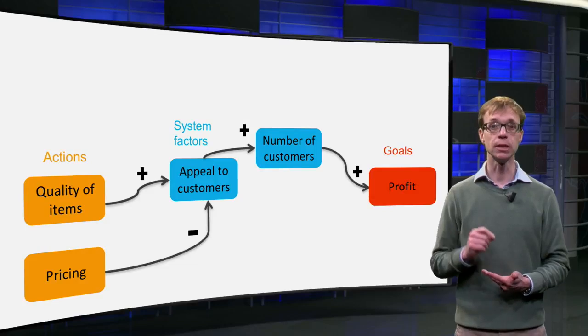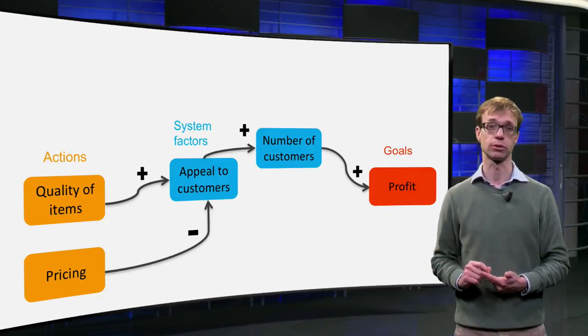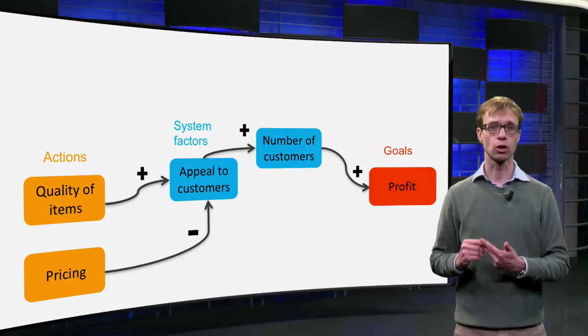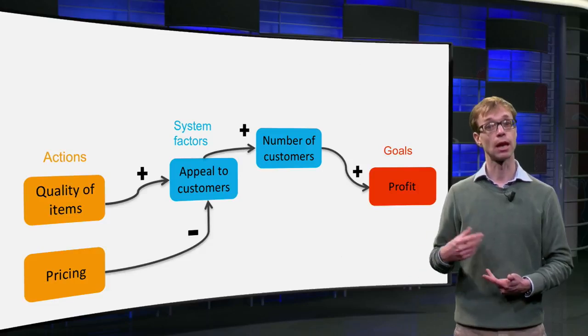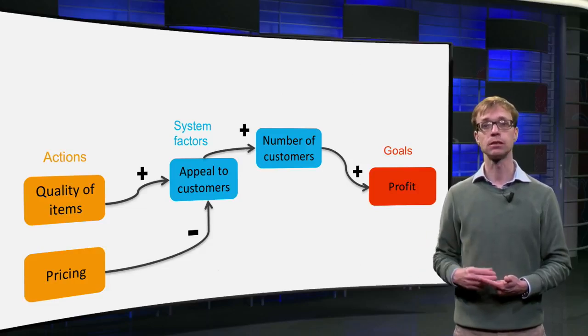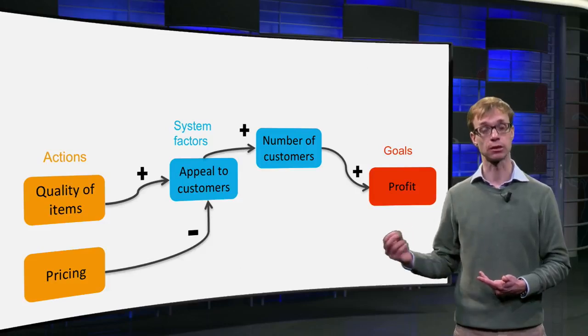System factors are intermediary factors that help unpack the causal mechanisms involved. For instance, the quality of items in the shop may influence their appeal for customers. Likewise, the pricing of items may influence if the shop can compete with items in other shops.